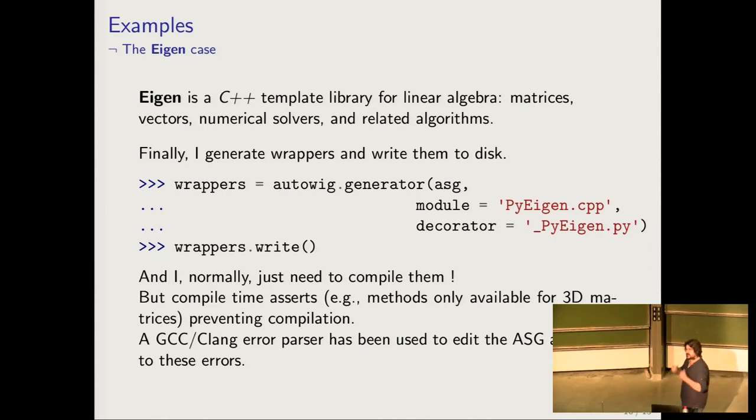Normally, if I compile all the wrappers that are generated, I have no errors. But since in Eigen there are many template methods that are not available for specific template instantiations, there are some methods that you can launch only on 3D matrices, for example. We developed a GCC or CLANG error parser in order to modify the ASG according to these errors, so you can bootstrap the process and after all, have the wrappers that are compiling.